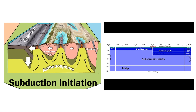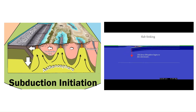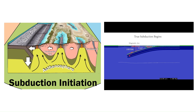At some point, a new subduction zone will form because the oceanic plate becomes too dense and starts to sink. We didn't have any idea about how this happened until recently, because the subduction initiation process occurs rarely, and when it does, it happens on the seafloor, hidden from view. The animation on the right shows how we think it happens.